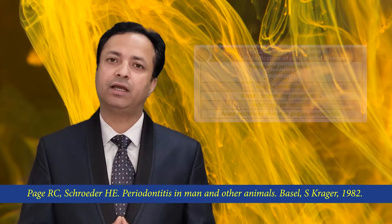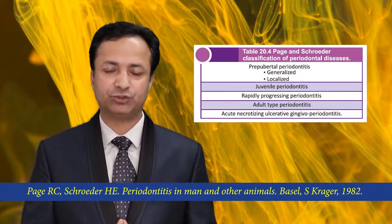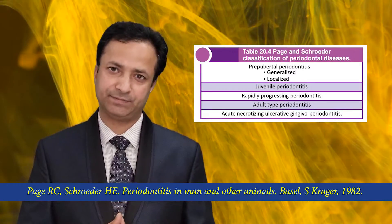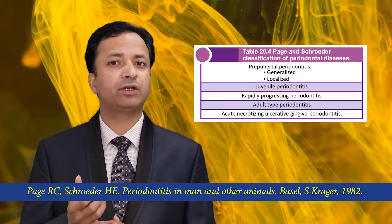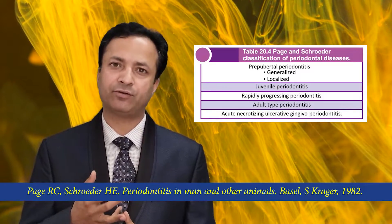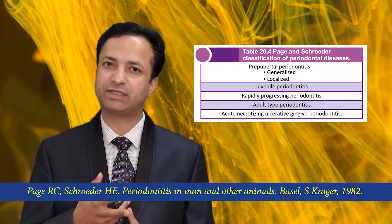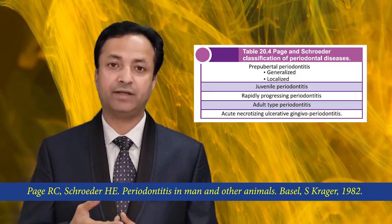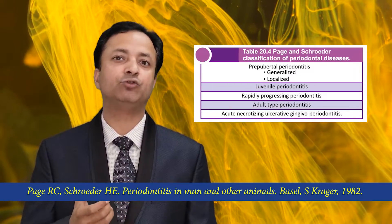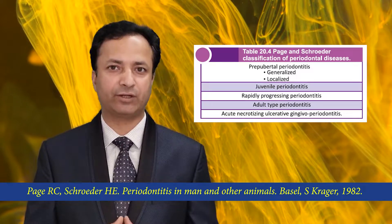The first very important classification system that acted as a foundation for future classification systems was given by Dr. Roy C. Page and Dr. Schroeder in 1982. They classified periodontal diseases into five categories: prepubertal periodontitis, juvenile periodontitis, rapidly progressive periodontitis, adult type periodontitis, and acute necrotizing ulcerative gingivoperiodonitis.